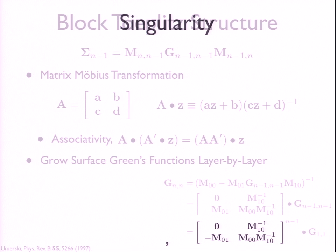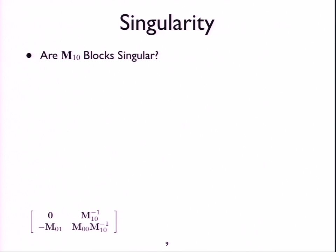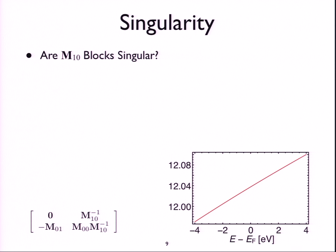Well then, knowing that layer N minus 1 is the same as N minus 2, is the same as N minus 3, and so on and so forth, we can then go and use the associativity of this matrix-Mobius transformation to lump all of it into one step. And basically just say, here's our matrix-Mobius transformation. We apply it N minus 1 times onto the Green's function for one layer, which is really easy to get. And so this is really cool. Now there's one small issue, is that if we look at this matrix carefully, we have to invert this M10 matrix, which tells you how one layer couples to either of its neighbors. And that raises the question, are these blocks singular?